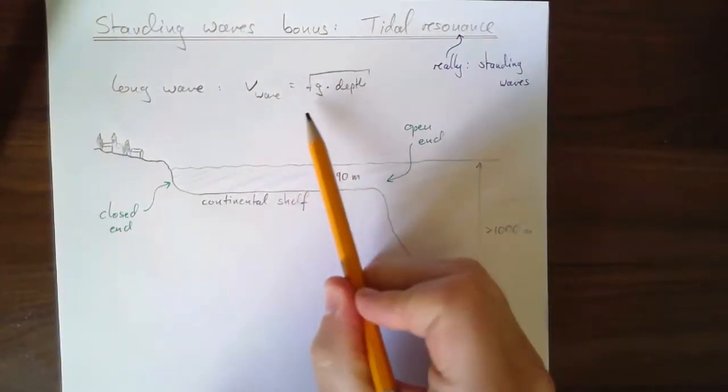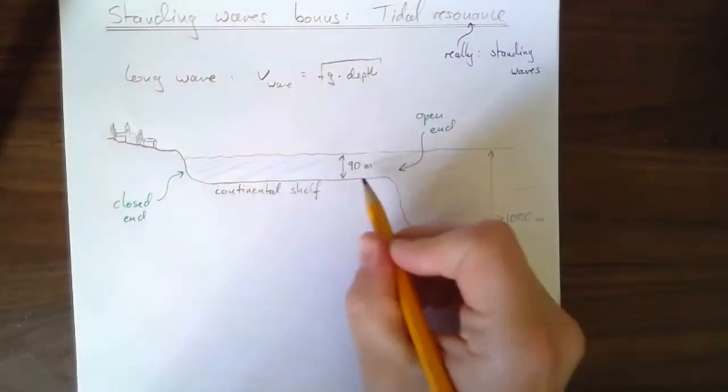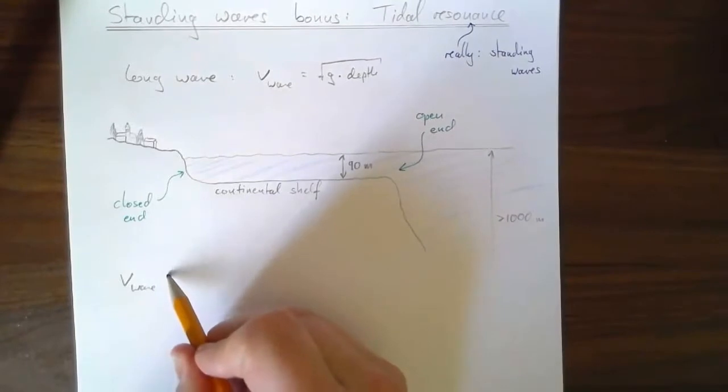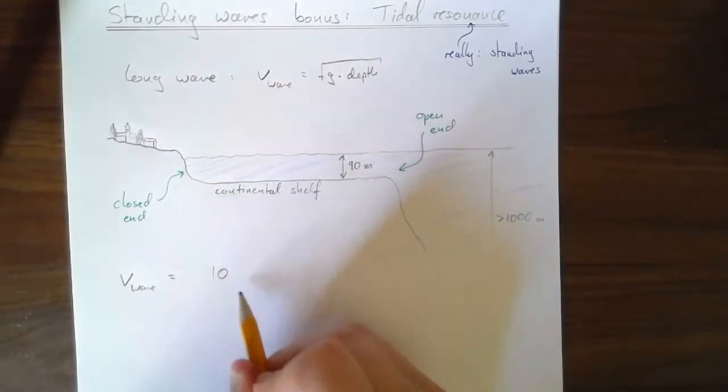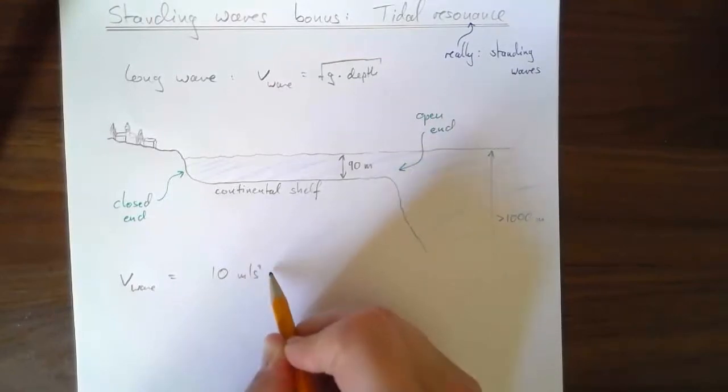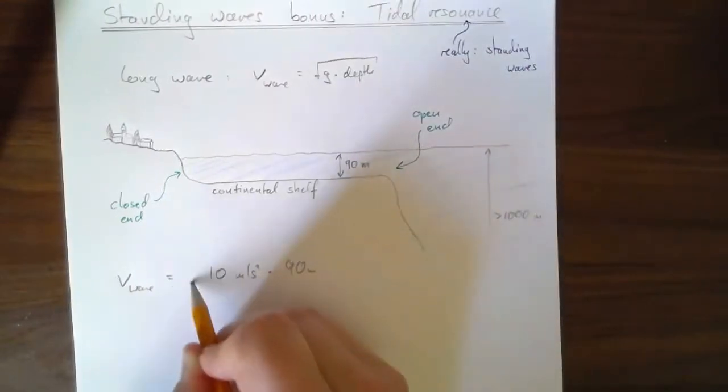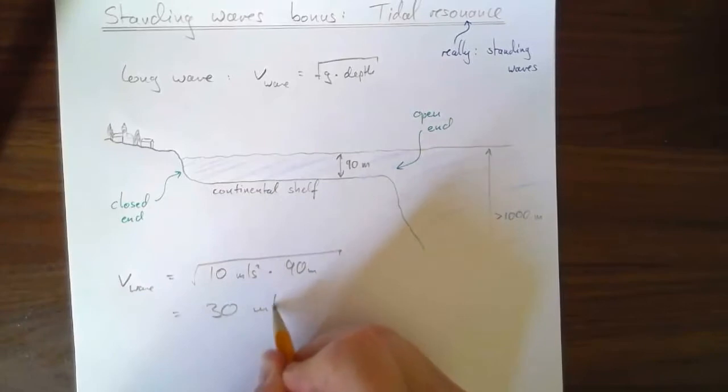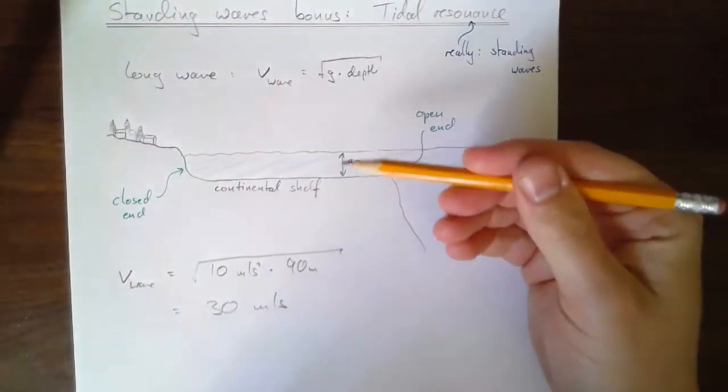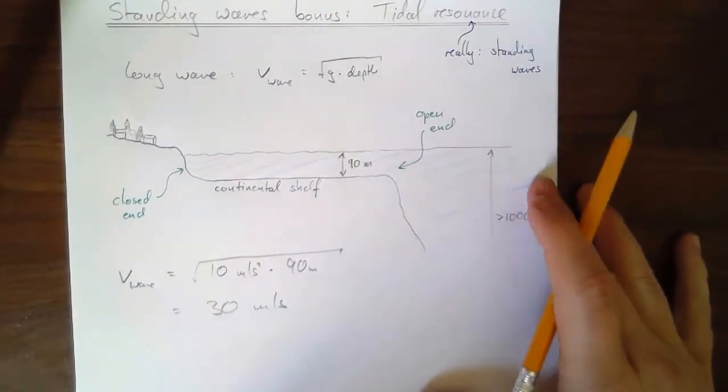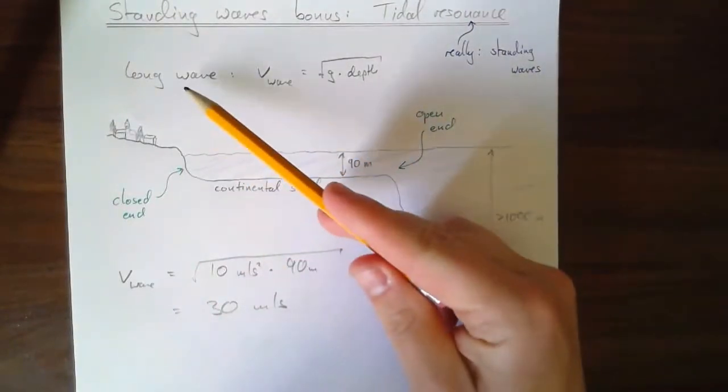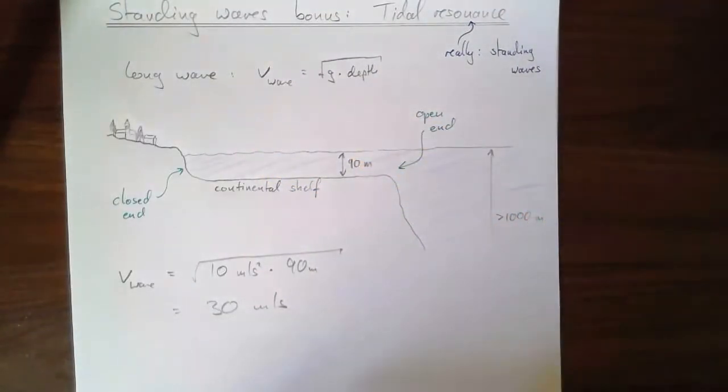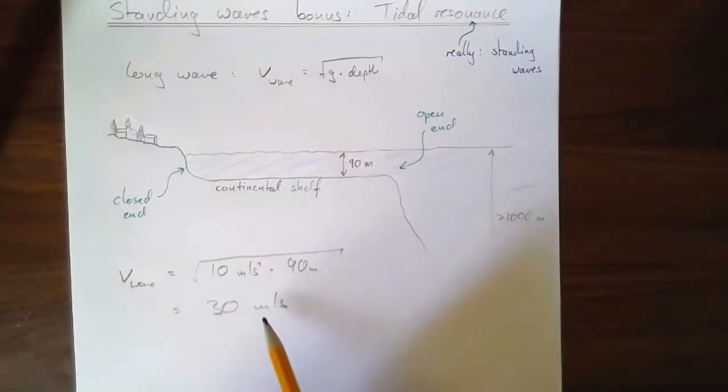So that's their speed. In our case, with 90 meters, the speed V on the continental shelf would be g, which is 10 meters per second squared times the depth, which is 90 meters, take the square root, square root of 900 is 30 meters per second. Now, those waves, they're not visible. They're way too long. They're thousands of kilometers long, so you can't see them. You can see them over time as the ocean rises and falls.